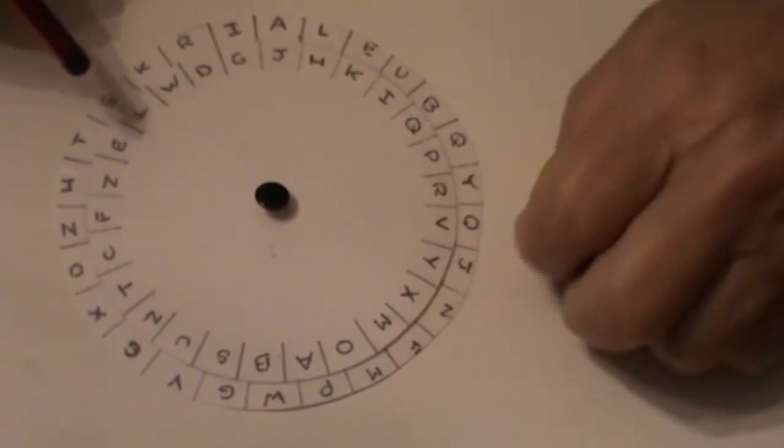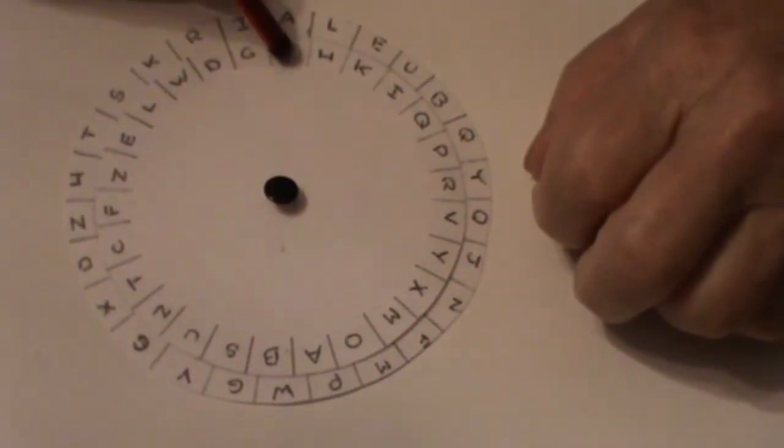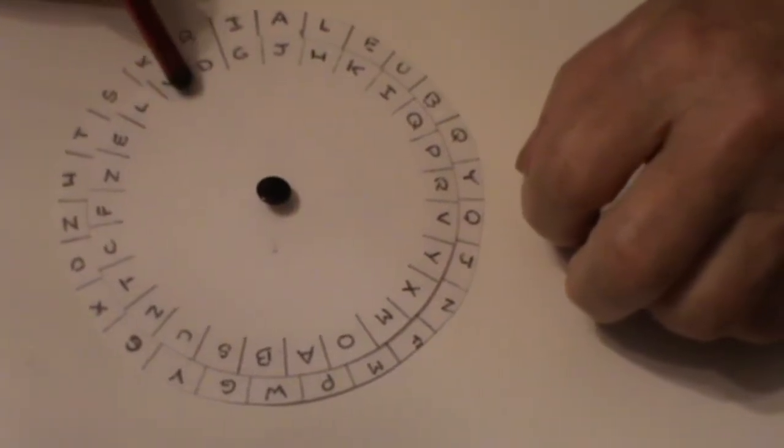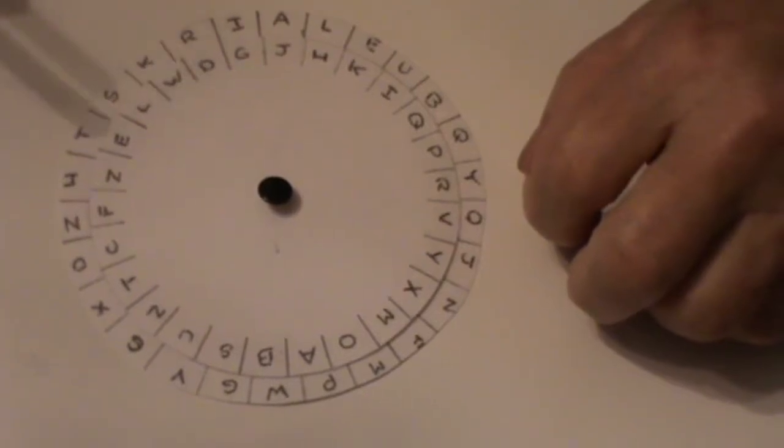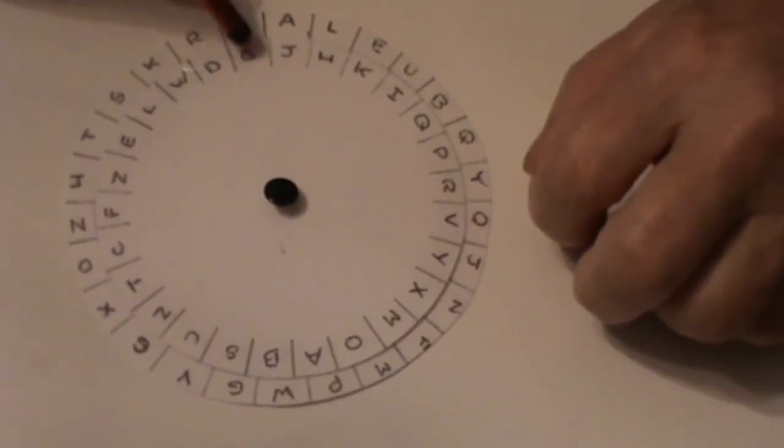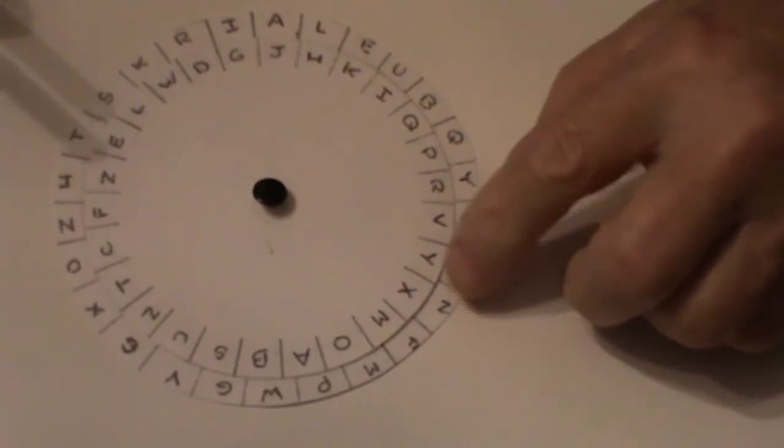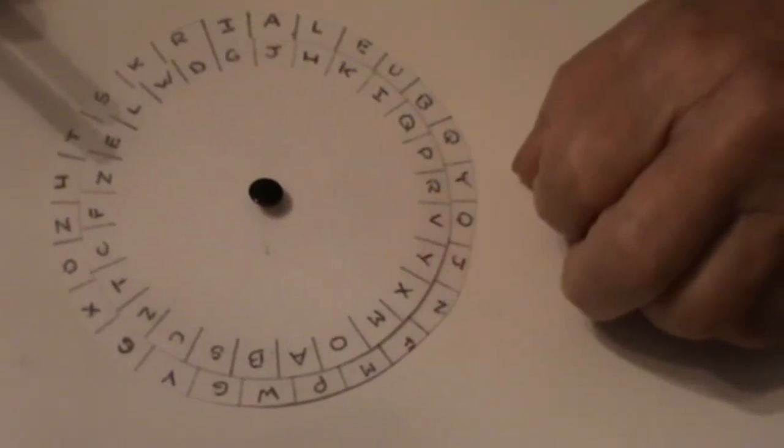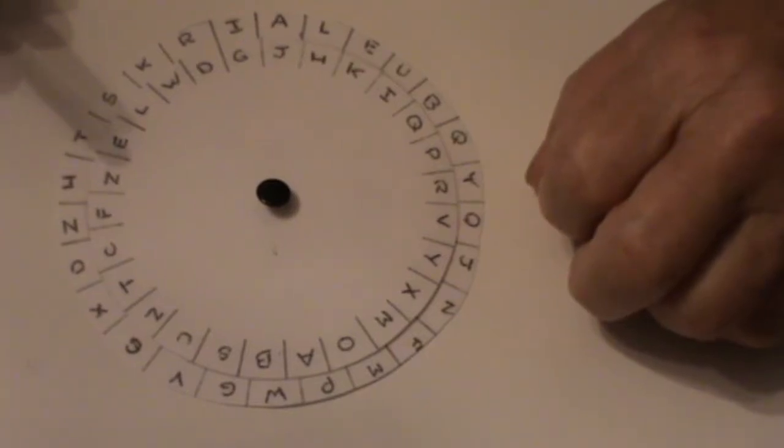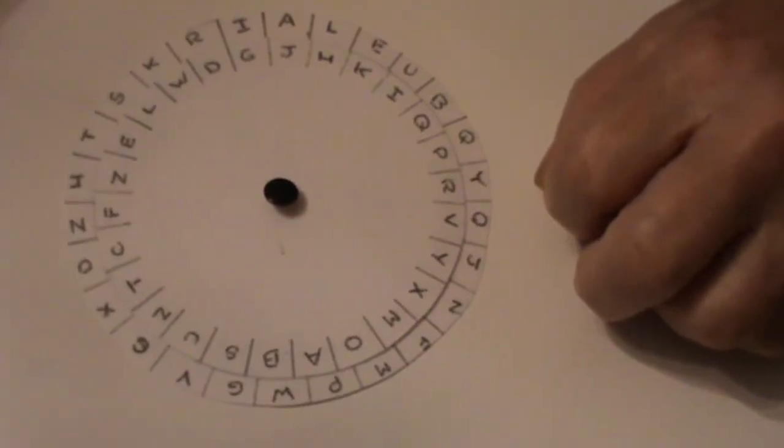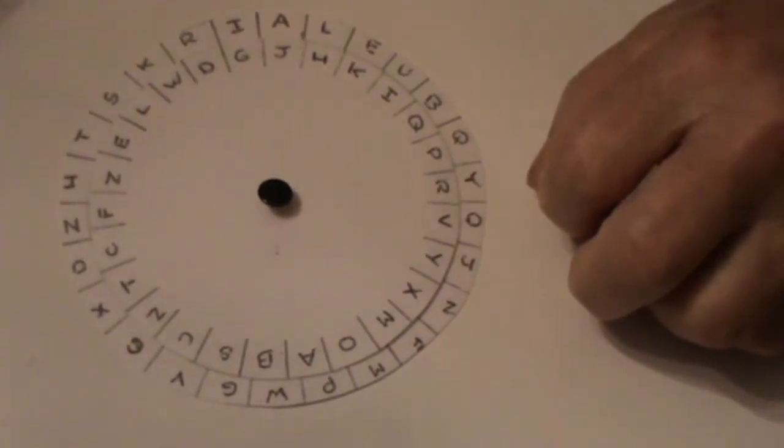A is J. K is W. I is G. N is X. And G is S. So that gives us a code O, J, W, G, X, S for making.